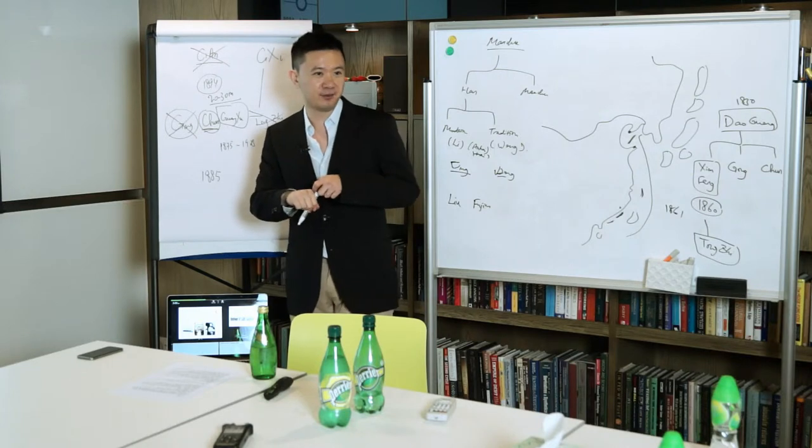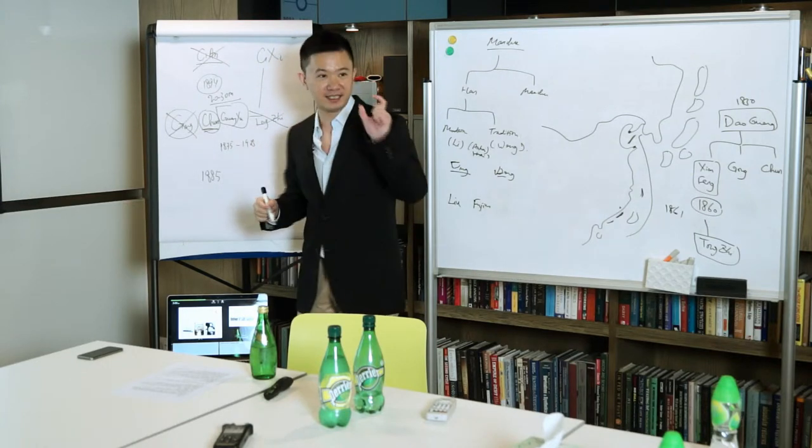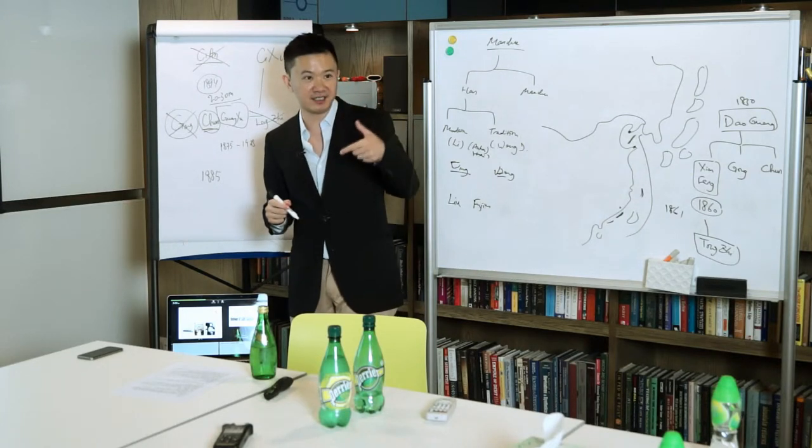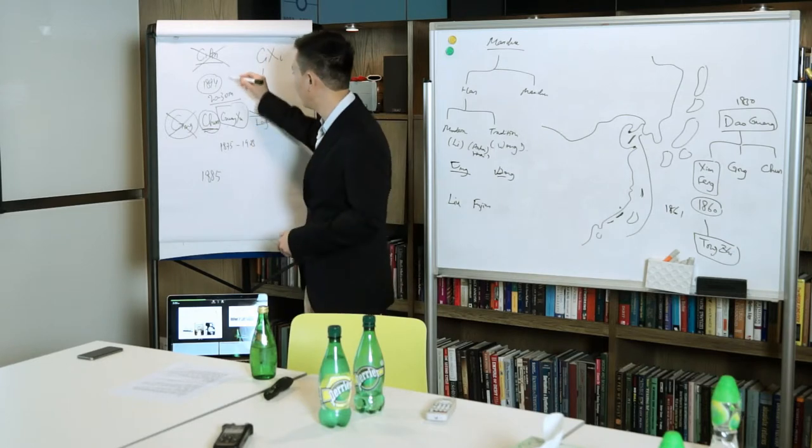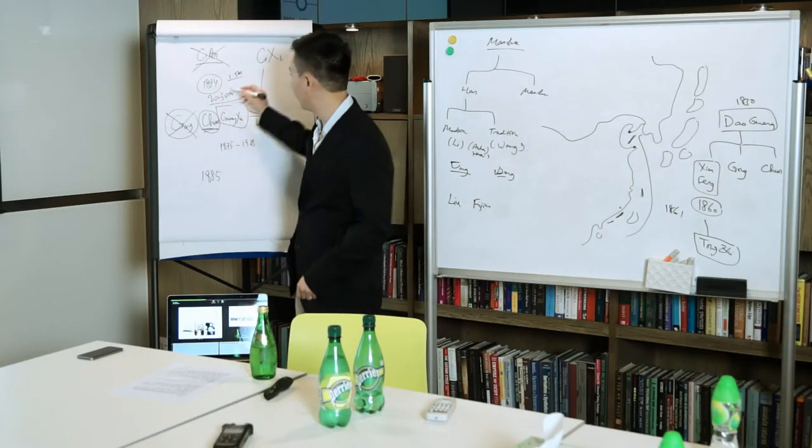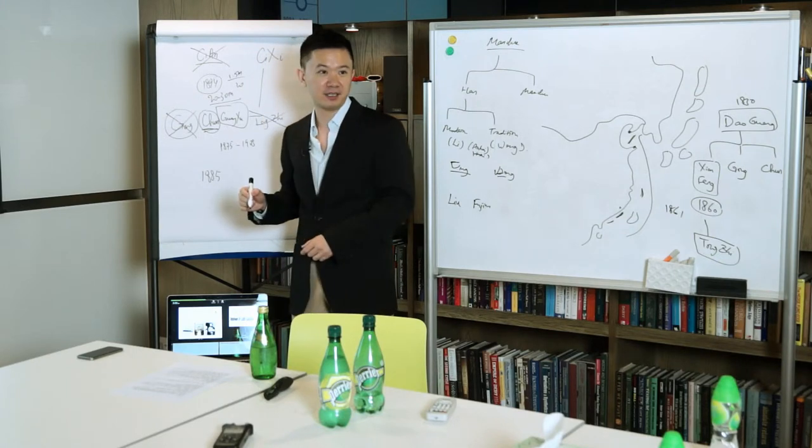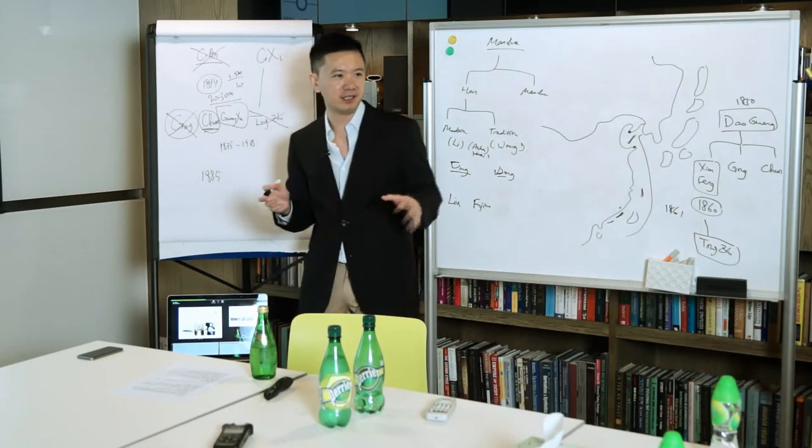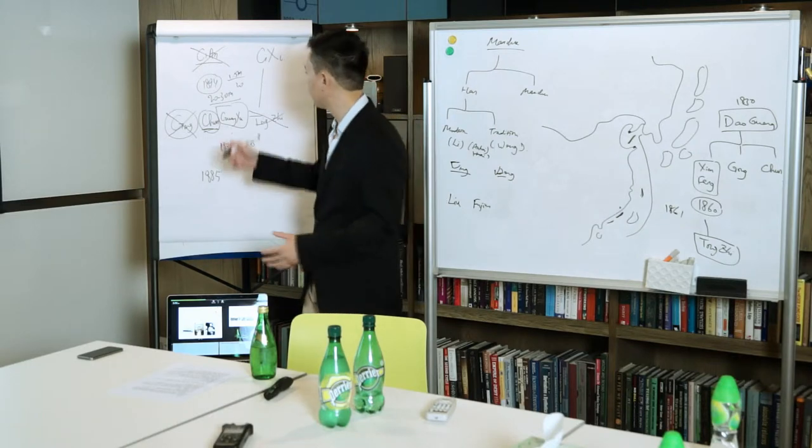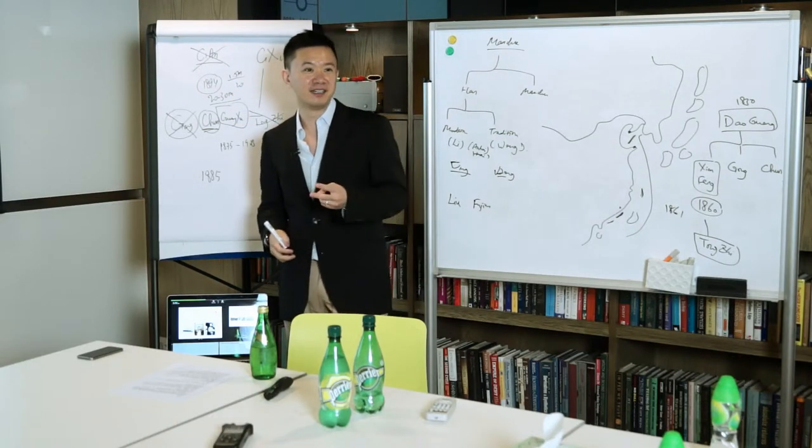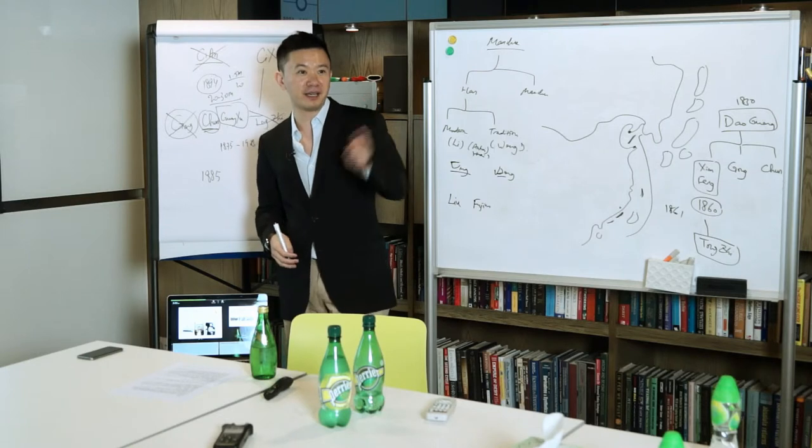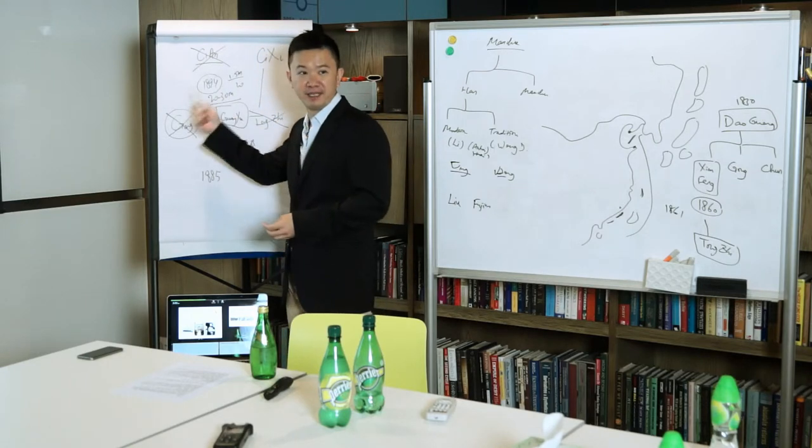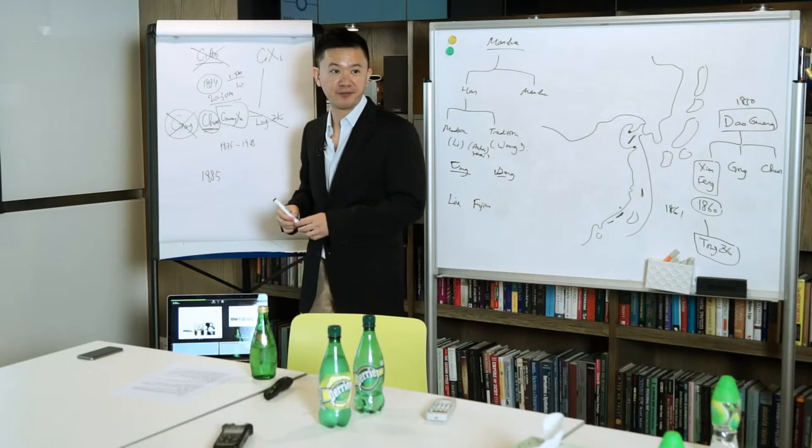But because Prince Chun had to rebuild all of this, it costed about 20 to 30 million taels of silver. Now back to, what's the context? One Dingyuan, the biggest, the seven thousand ton ship cost 1.5 million. So we're talking about 20 Dingyuan. And each, the fleet had about like 12 to 15 ships. And so we're talking about two more Beiyang, two more Beiyang fleets with this amount from 1886 to 1894.